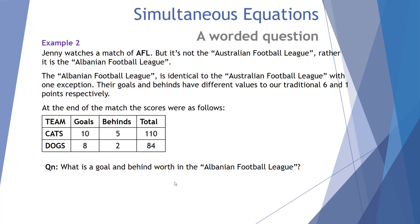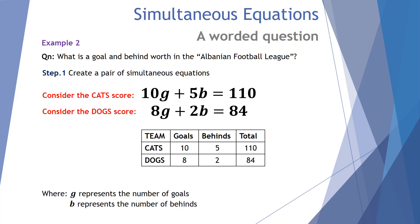Final example: Jenny watches a match of the Albanian Football League, which is identical to the Australian Football League except goals and behinds have different point values. At the end of the match: the Cats had 10 goals and 5 behinds for 110 points; the Dogs had 8 goals and 2 behinds for 84 points. The question is: what is a goal and a behind worth in the Albanian Football League? Step one — create simultaneous equations: 10G plus 5B equals 110, and 8G plus 2B equals 84.